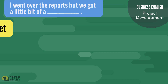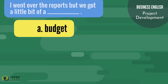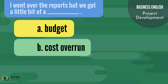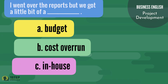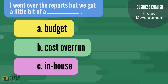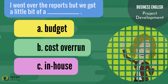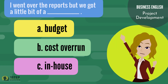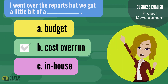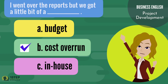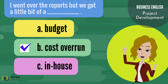The correct answer is letter C, in-house. The correct answer is letter B, cost overrun. 'I went over the reports, but we got a little bit of a cost overrun.'